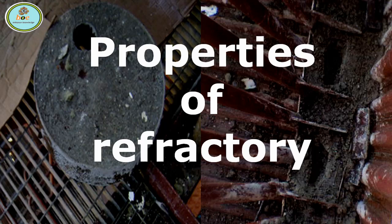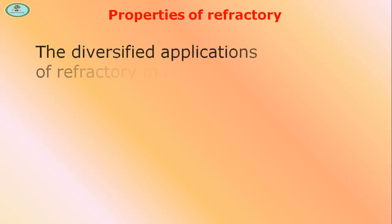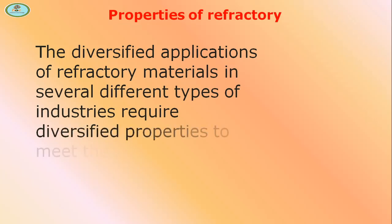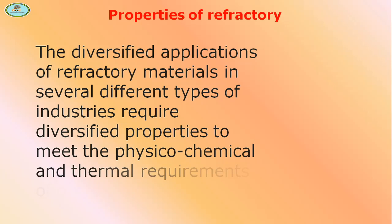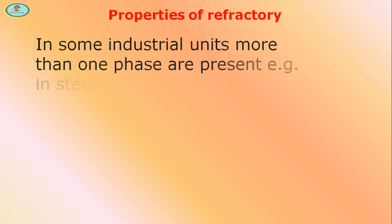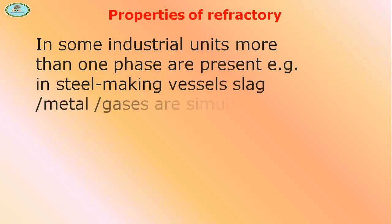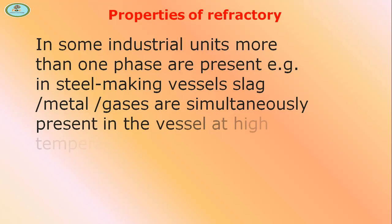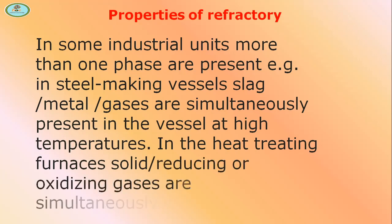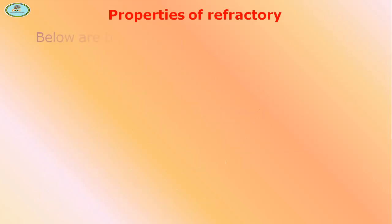Hello friends, welcome back to my channel Bio Tutorials. In this video we will discuss properties of refractory materials. The diversified applications of refractory materials in several different types of industries require diversified properties to meet the physico-chemical and thermal requirements of different phases. In some industrial units, more than one phase are present — in steelmaking vessels, metal and gases are simultaneously present at high temperatures. In heat treating furnaces, solid reducing or oxidized gases are also simultaneously present.